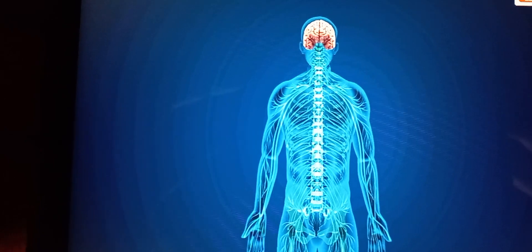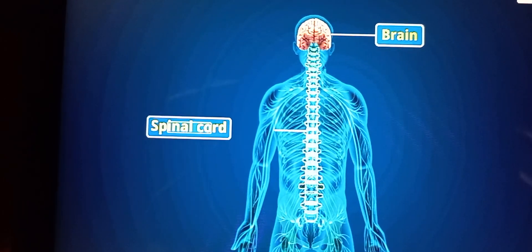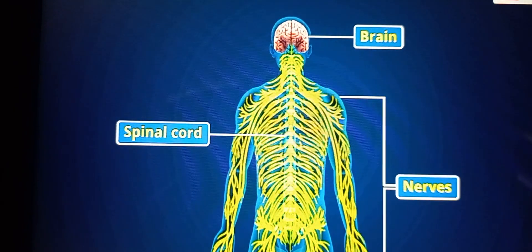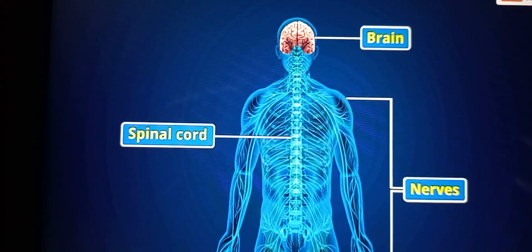Hello students, we know that the brain, the spinal cord, and the nerves are the three parts of our nervous system.